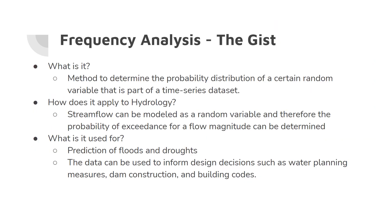Wrapping everything up, this module in essence is just about frequency analysis. The gist of what we're going to cover, and really our end goal, is to answer: what is it, how does it apply to hydrology, and what is it used for? It's a method to determine the probability distribution of a certain random variable that is part of a time series dataset. It applies because stream flow can be modeled as this random variable, and therefore we can determine flow magnitudes of different probabilities of exceedance or non-exceedance. It's used for prediction of floods and droughts, which is really important to engineers and hydrologists, and it can inform design decisions and water planning measures.